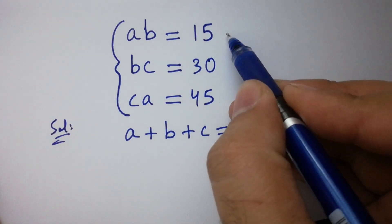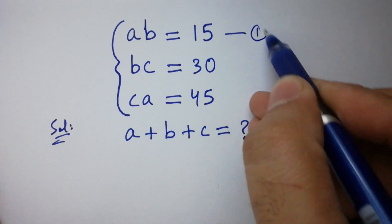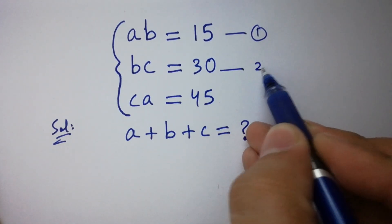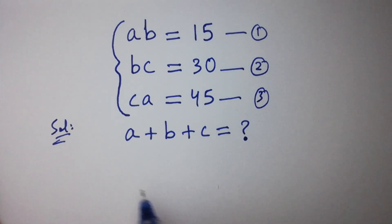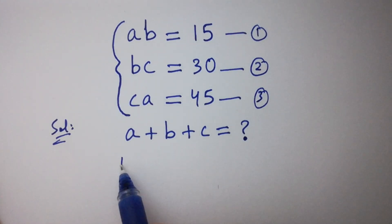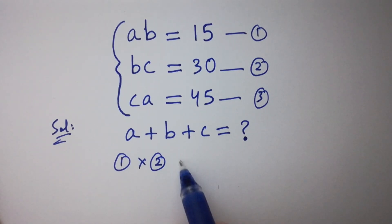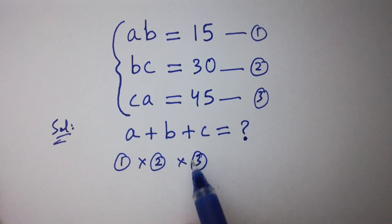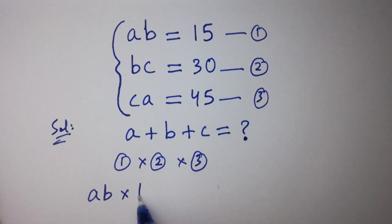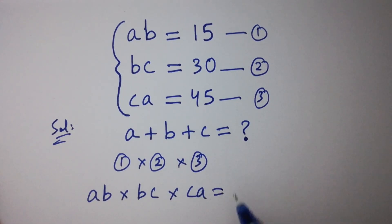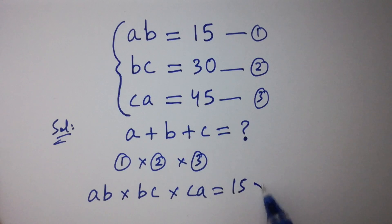Let ab be the first equation, bc the second equation, and ca the third equation. To solve this, multiply these equations together. Then we have ab times bc times ca equal to 15 times 30 times 45.